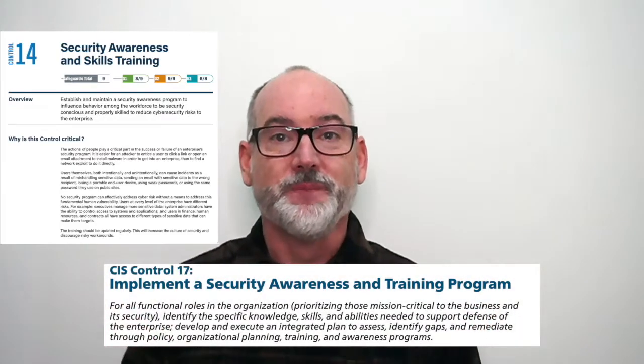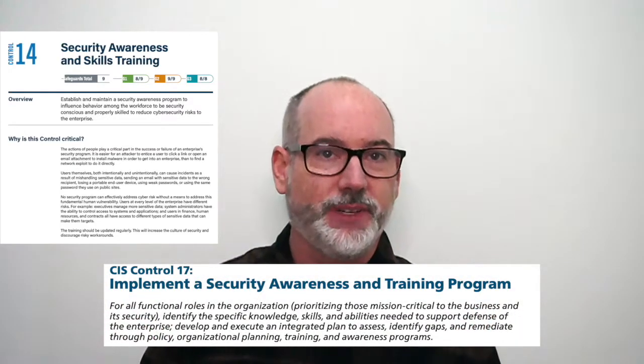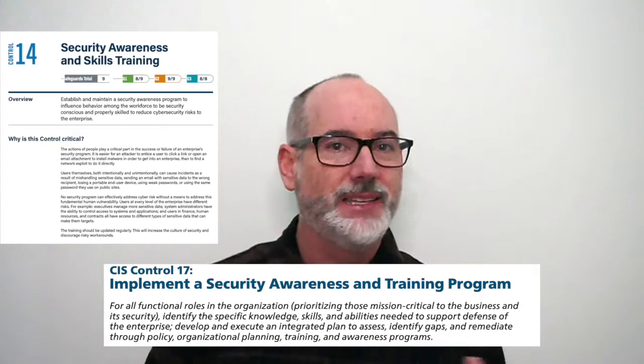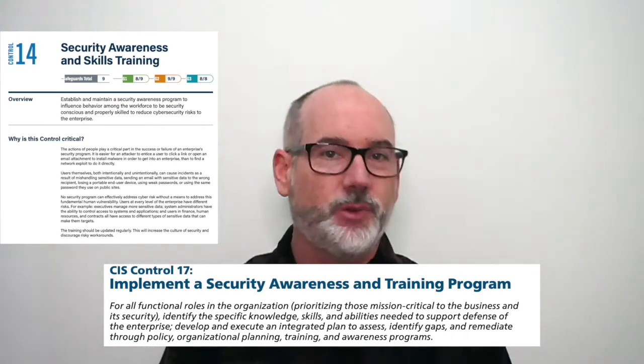Now let's look at the upfront narrative material. The overview is new — we say: establish and maintain a security awareness program to influence behavior among the workforce to be security conscious and properly skilled to reduce cybersecurity risk to the enterprise. This is very different from the version 7 overview, which talked about functional roles, identifying specific knowledge, skills, and abilities to support defense of the enterprise, and executing an integrated plan to assess, identify gaps, and remediate through policy, organizational planning, training, and awareness programs. We simplified it because the old version seemed all over the place, especially since we removed the workforce development sub-controls.